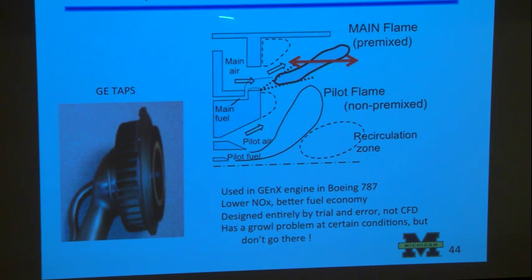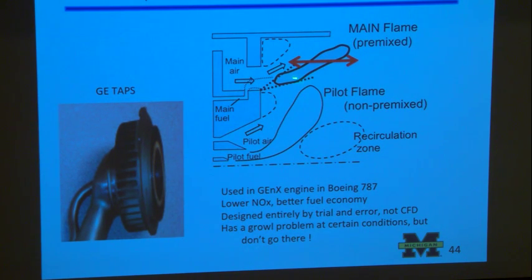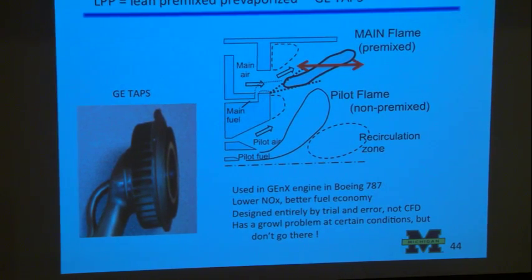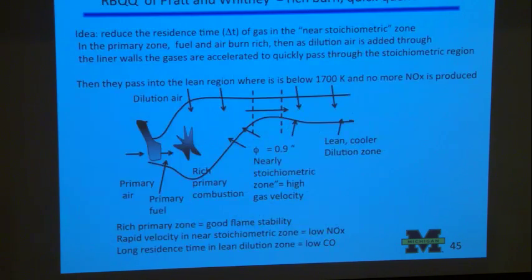The lean pre-mixed, pre-vaporized idea is to lift the flame off such that there's a lot of mixing and then burn it as a stratified pre-mixed flame, hopefully with a pilot flame to keep this from going out. The people I've talked to admit that the design is strictly trial and error, and then they do a lot of CFD afterward to explain and optimize it. So there's a very strong CFD group looking at these types of problems, but first you've got to cut metal and see if it works.